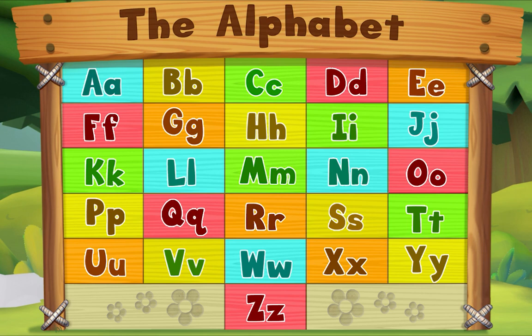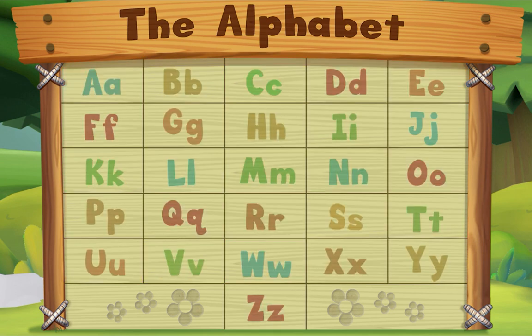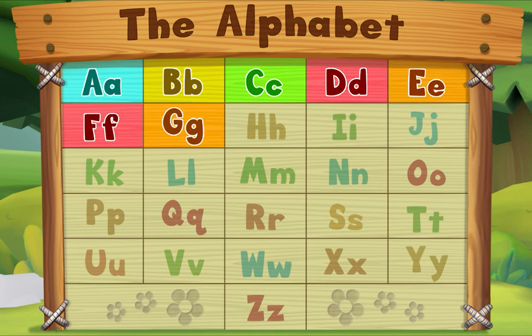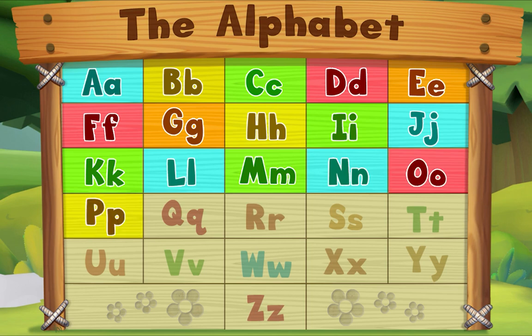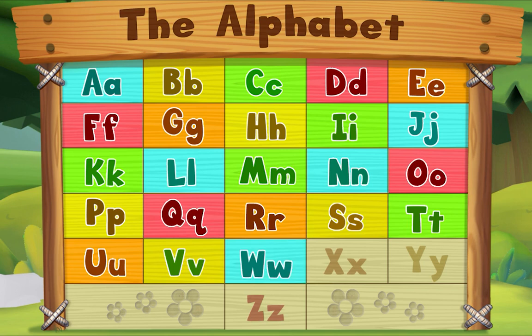Now I know my ABCs, next time won't you sing with me. Now this time let's sing together — A B C D E F G, H I J K L M N O P, Q R S T U V W, X Y Z, Y Z, Y Z. Now I know my ABCs, next time won't you sing with me.